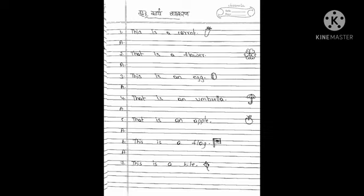Read the first sentence: 'This is a carrot.' Carrot ko Hindi mein kya kahte hai? Carrot ko Hindi mein gajar kahte hai — gajar. This is a carrot. This ka matlab kya hai? Aap yaha likhiye, aor baqi ka vaakir bana kar likhiye.